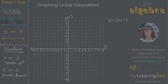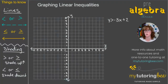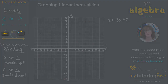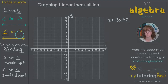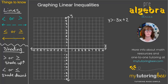One difference is the line. When we don't have that line underneath the inequality symbol — the 'or equal to' — we are going to use a dashed or dotted line. This broken line represents that the line does not equal the solutions; it's just the boundary. If it does have that line underneath, we're going to use a solid line.